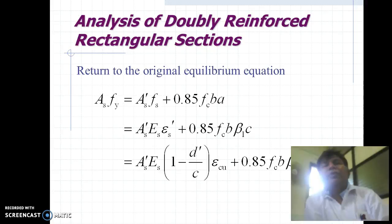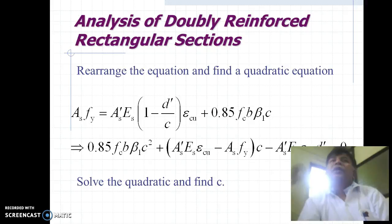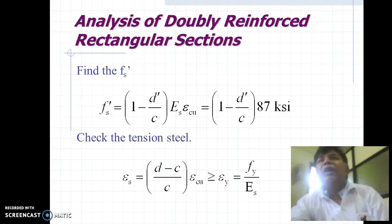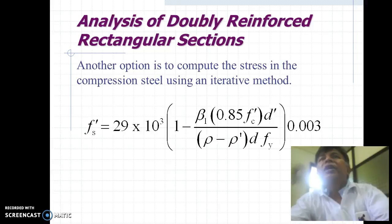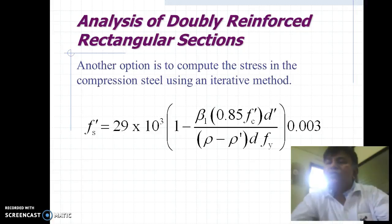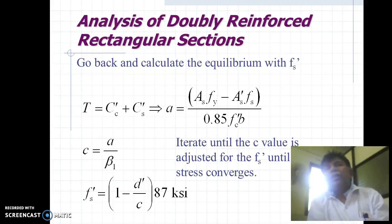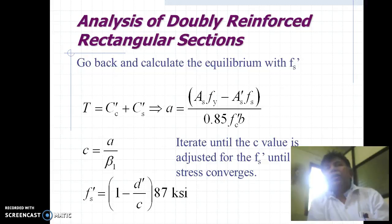Return to the original equilibrium equations and rearrange them to find a quadratic equation. After finding the quadratic equation, solve it to find the value of C. After finding C, determine the stress in steel at the level of steel and check the tension steel. Another option is to compute the stresses in the compression steel using an iterative formula. Rearrange the equation, find the total tensile force, compare it to the total compressive force, and then compute the moment of resistance.